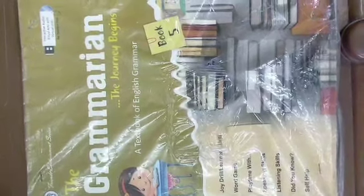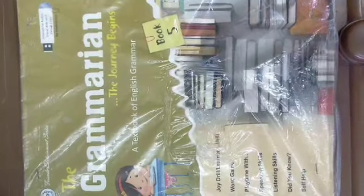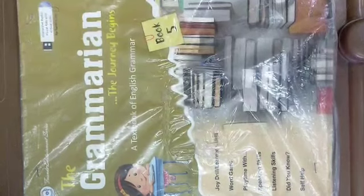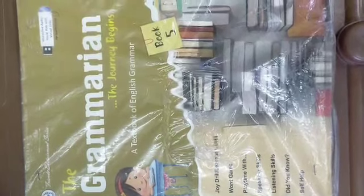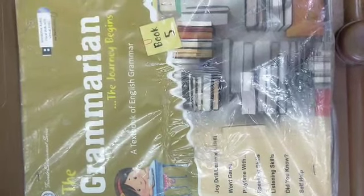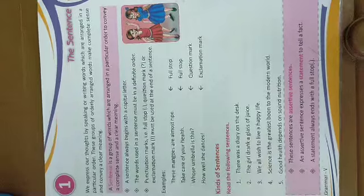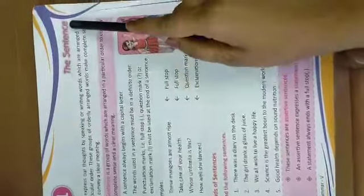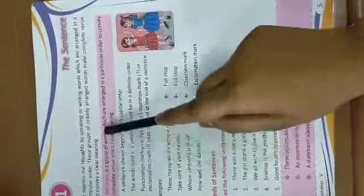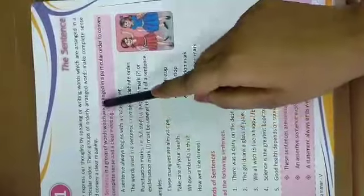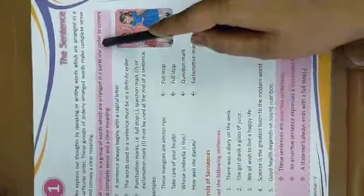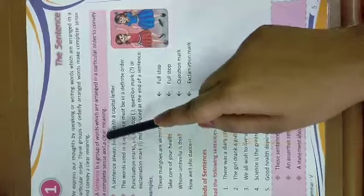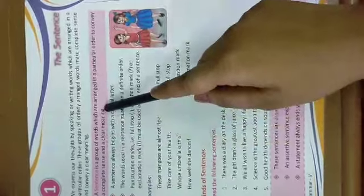Hello children, good morning. In this video we will be studying our English grammar. This is your English grammar book and we will start Lesson 1. Your Lesson 1 is the sentence. A sentence is a group of words which are arranged in a particular order to convey a complete sense and a clear meaning.